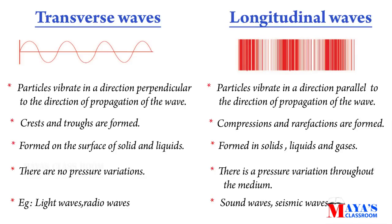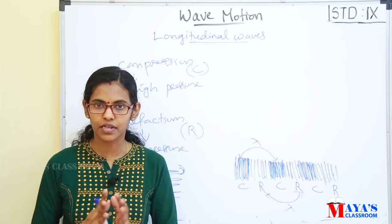In transverse waves, particles vibrate in a direction perpendicular to the direction of propagation. In longitudinal waves, particles vibrate in a direction parallel to the direction of propagation. In transverse waves, crests and troughs are formed. In longitudinal waves, compressions and rarefactions are formed. Transverse waves form on the surface of solids and liquids. Longitudinal waves form in solids, liquids, and gases. In transverse waves there are no pressure variations. In longitudinal waves there is a pressure variation throughout the medium. Examples of transverse waves: light waves, radio waves. Examples of longitudinal waves: sound waves, seismic waves. We have discussed the characteristics of the wave and some equations and problems.